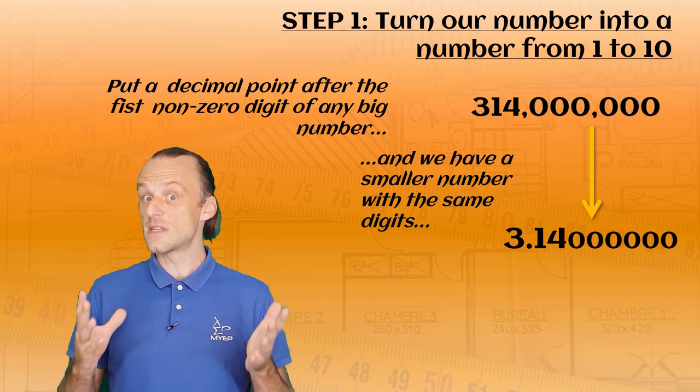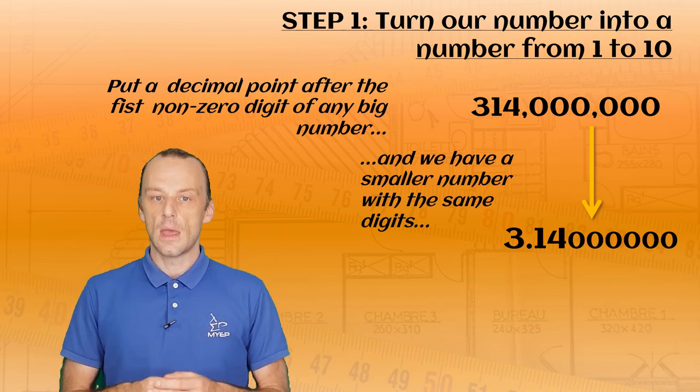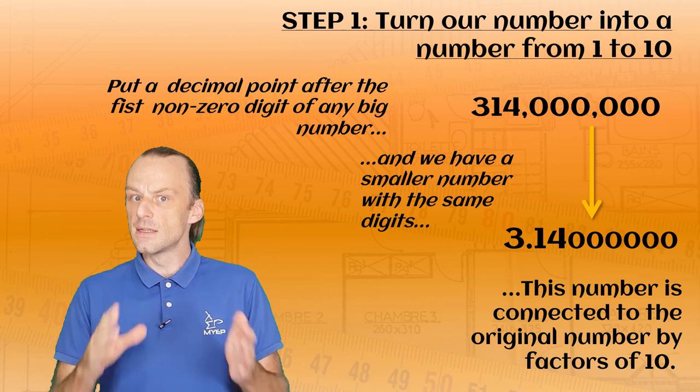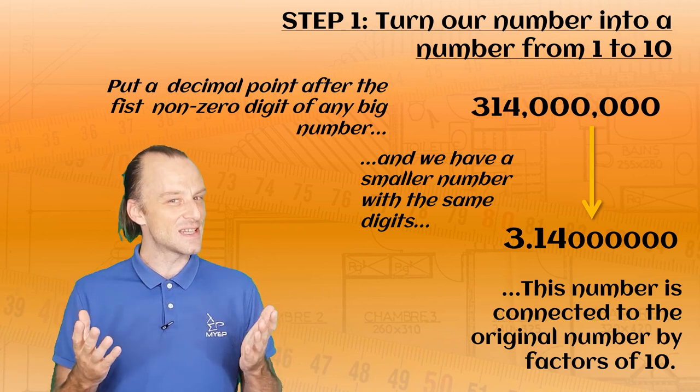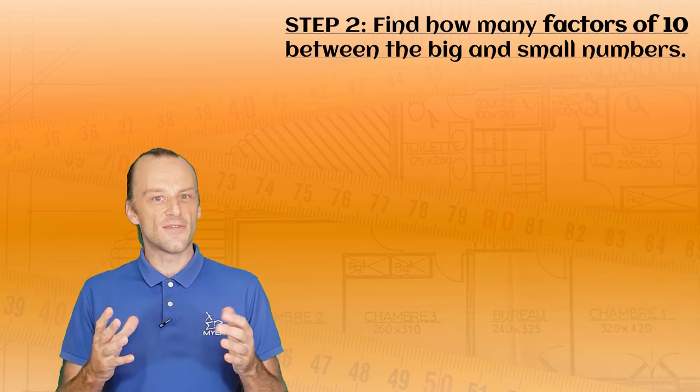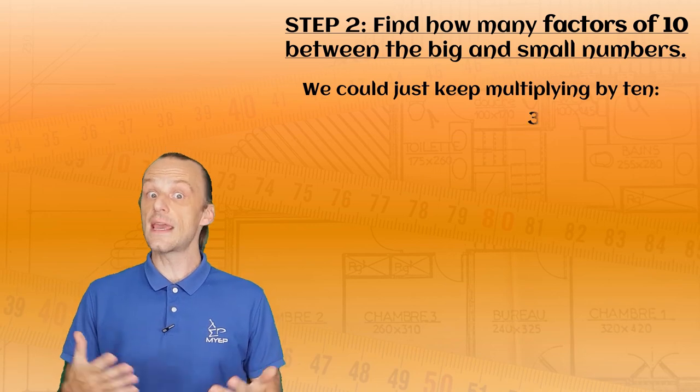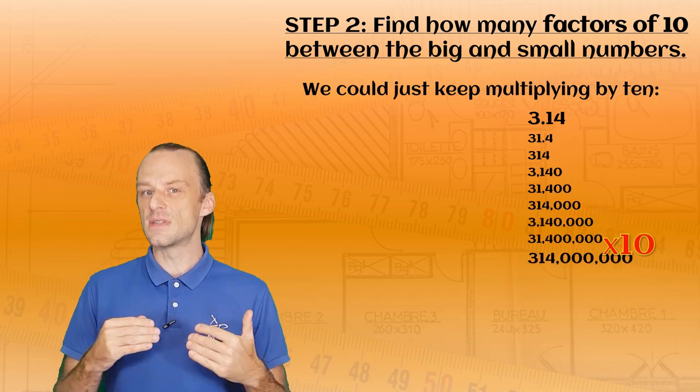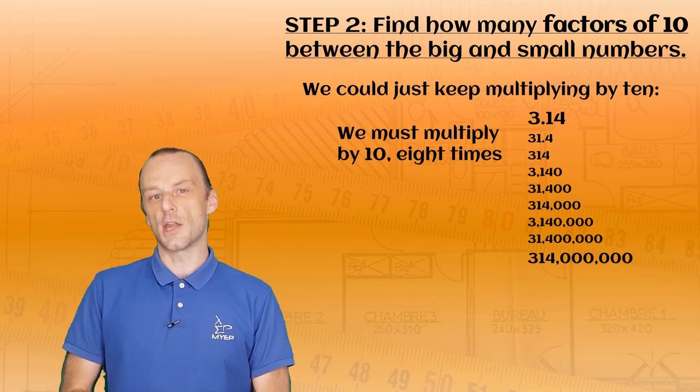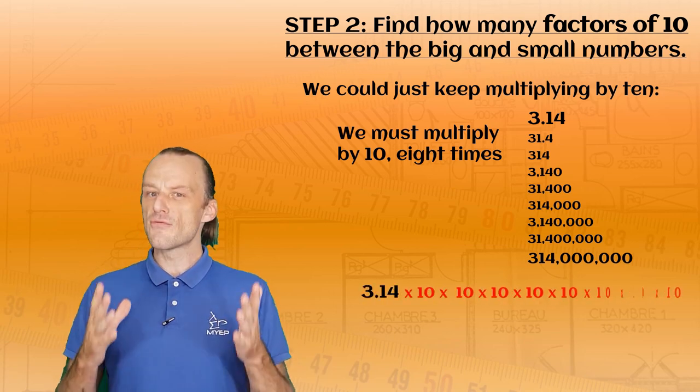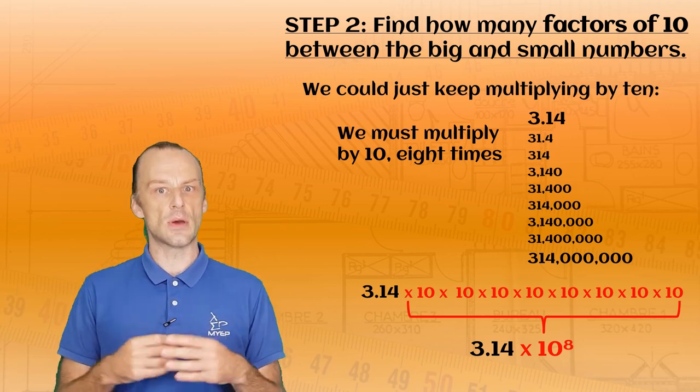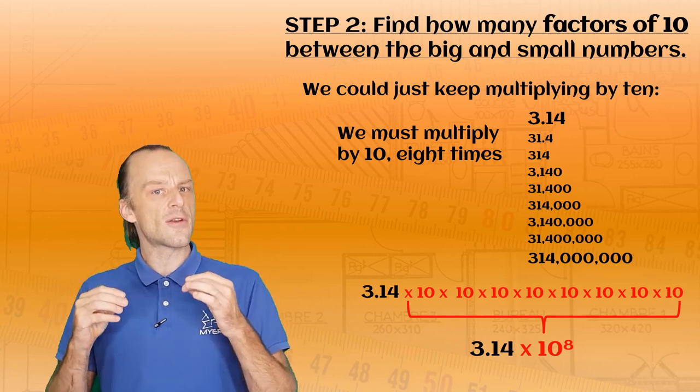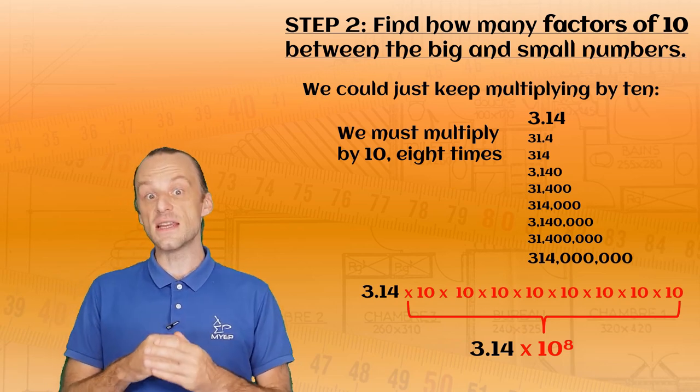But because it has exactly the same digits, this smaller number is connected to our larger number by multiples of the number 10. The question is, how many multiples of 10? One way to find out is to just keep multiplying by 10 until we get back to our original number. So in this case, we would need to multiply by 10 eight times to get from 3.14 all the way up to 314 million. A quicker way of writing times 10 eight times is to use an exponent, and this is where we get 10 to the power of 8. So 314 million is 3.14 times 10 to the power of 8 in standard form.